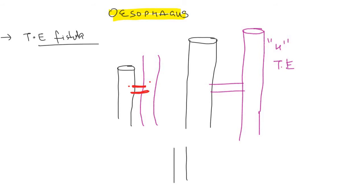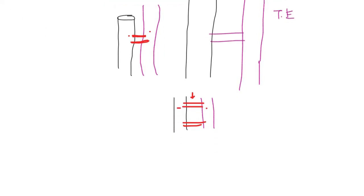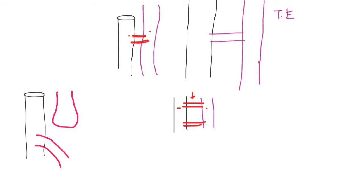There can also be a type where both the upper and lower ends of the trachea and esophagus are communicating. However, the commonest type is one in which the upper end of the esophagus ends as a blind pouch, while the lower end connects with the trachea on one side and the stomach on the other.